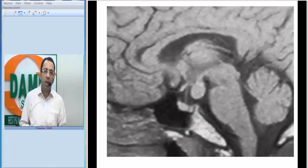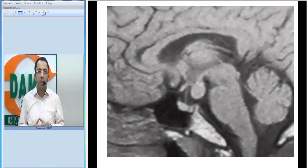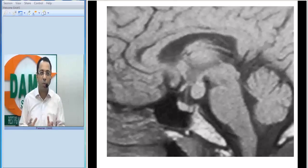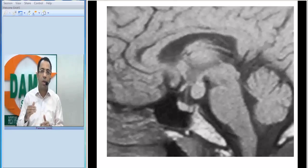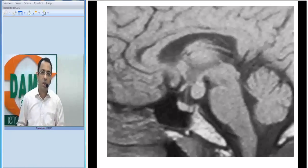This is a young child who presented with precocious puberty. Whenever we think of precocious puberty and we see an MRI brain, we start thinking of maybe hypothalamic lesions. So what do you think is the diagnosis in this patient?